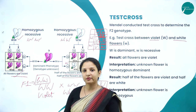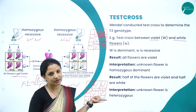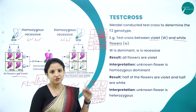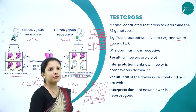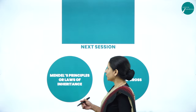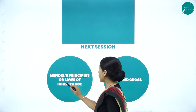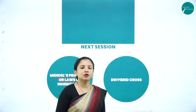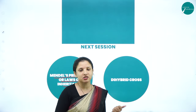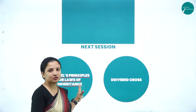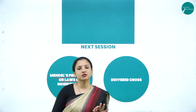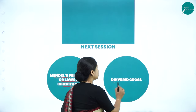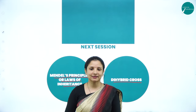This was about monohybrid crosses — back cross and test cross — all involving only one character or one single gene. In the next session, we will talk about Mendel's principles or laws of inheritance: the law of segregation and the law of dominance seen in monohybrid cross, and the law of independent assortment, which will be explained using the example of dihybrid cross. See you in the next session. Thank you.